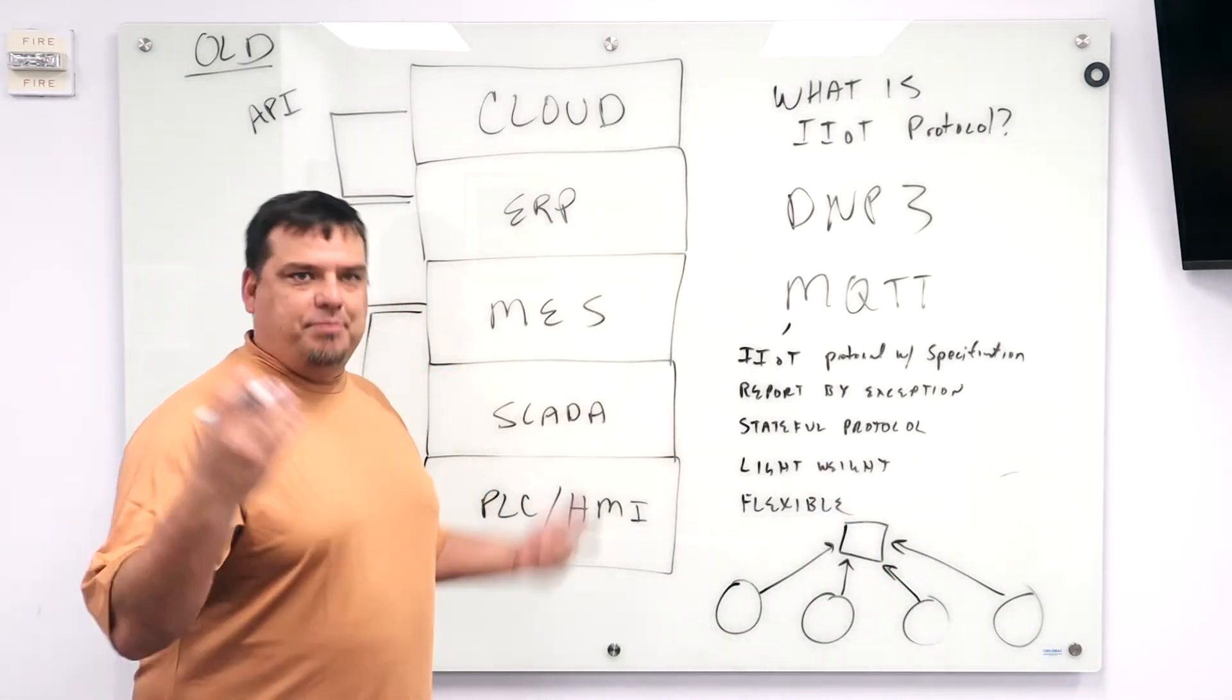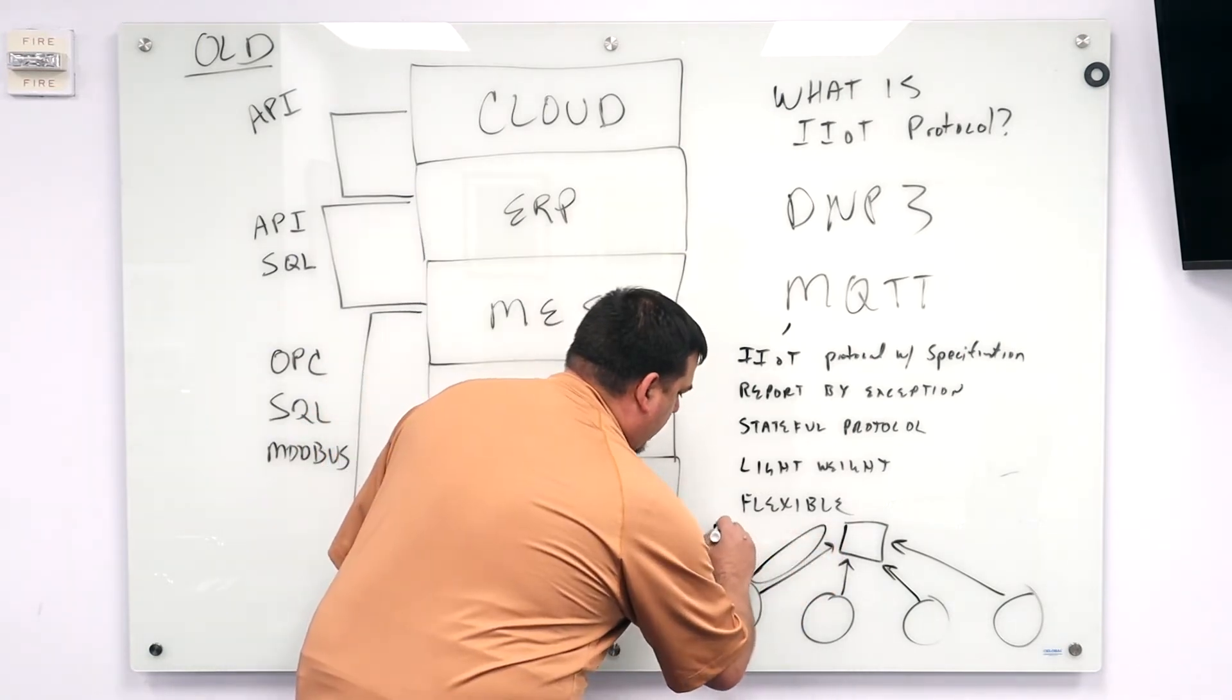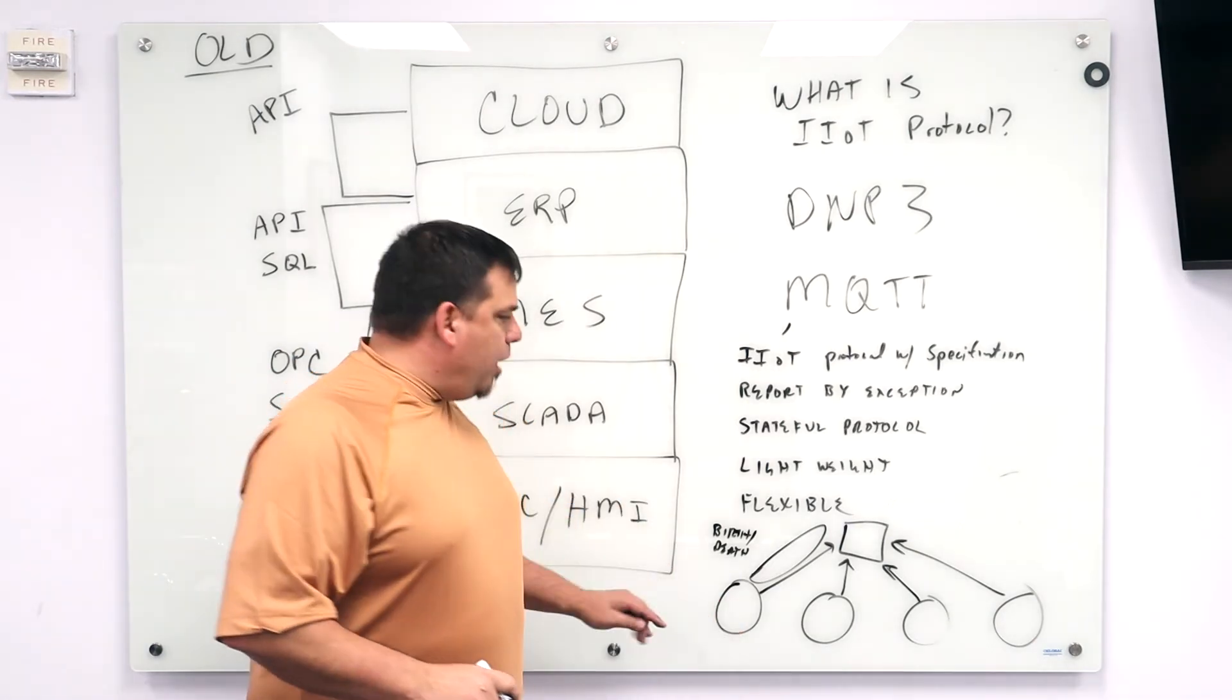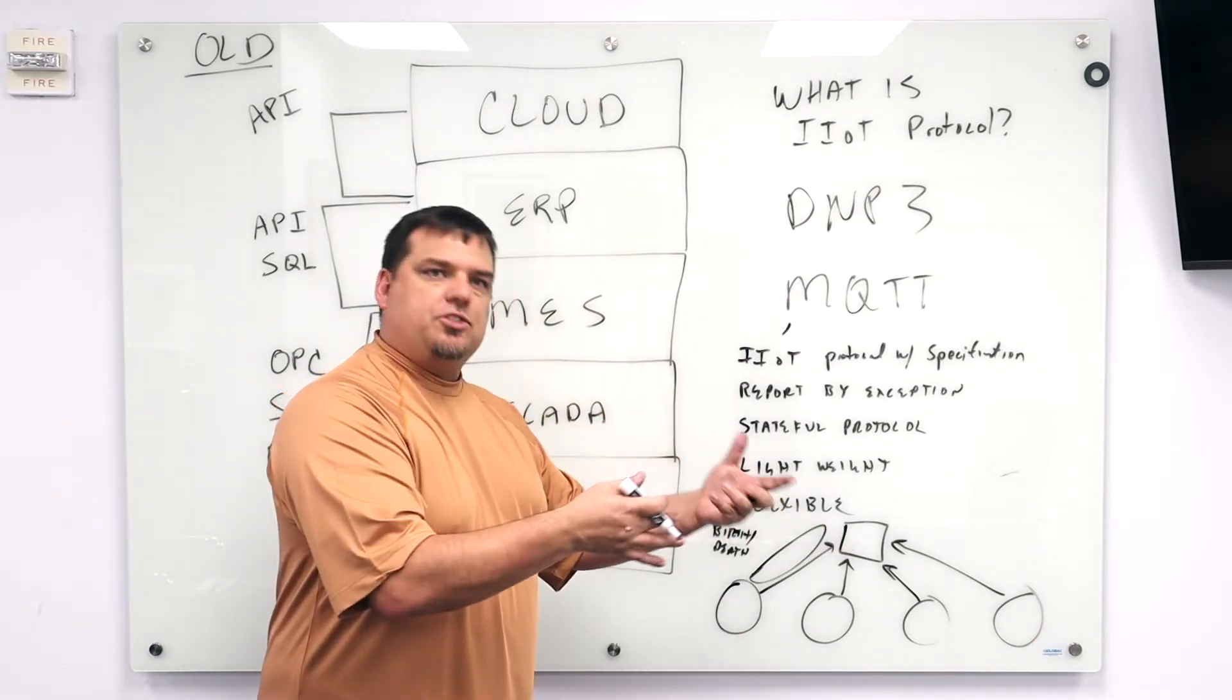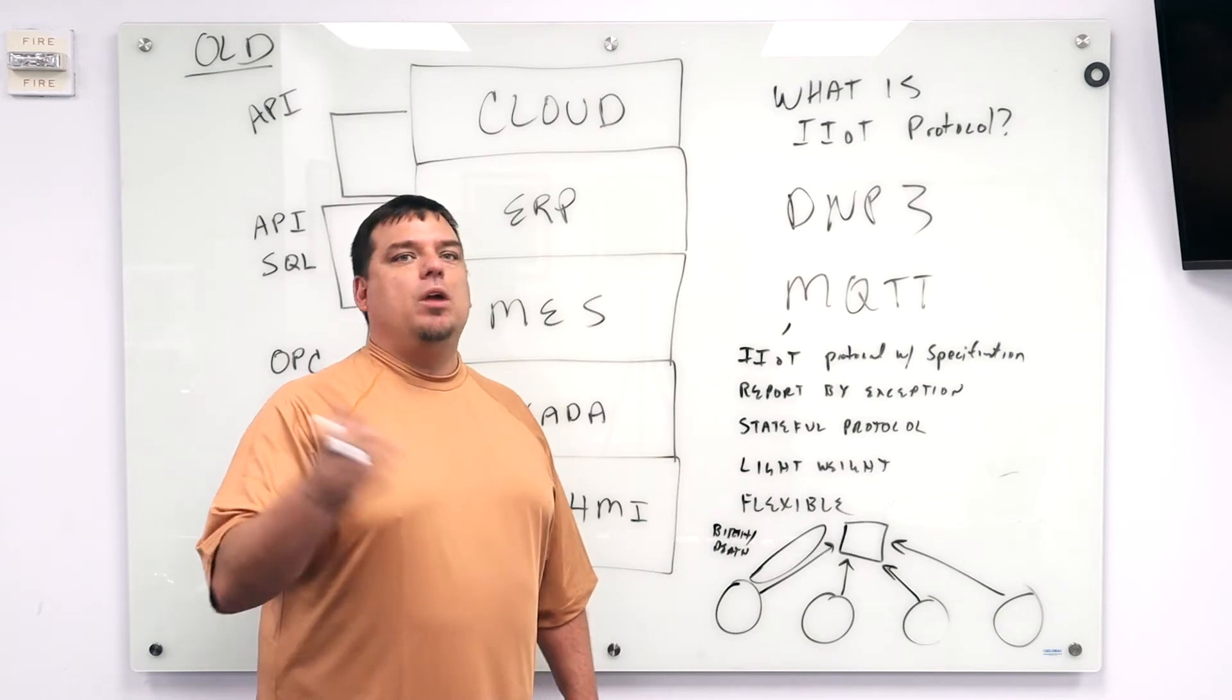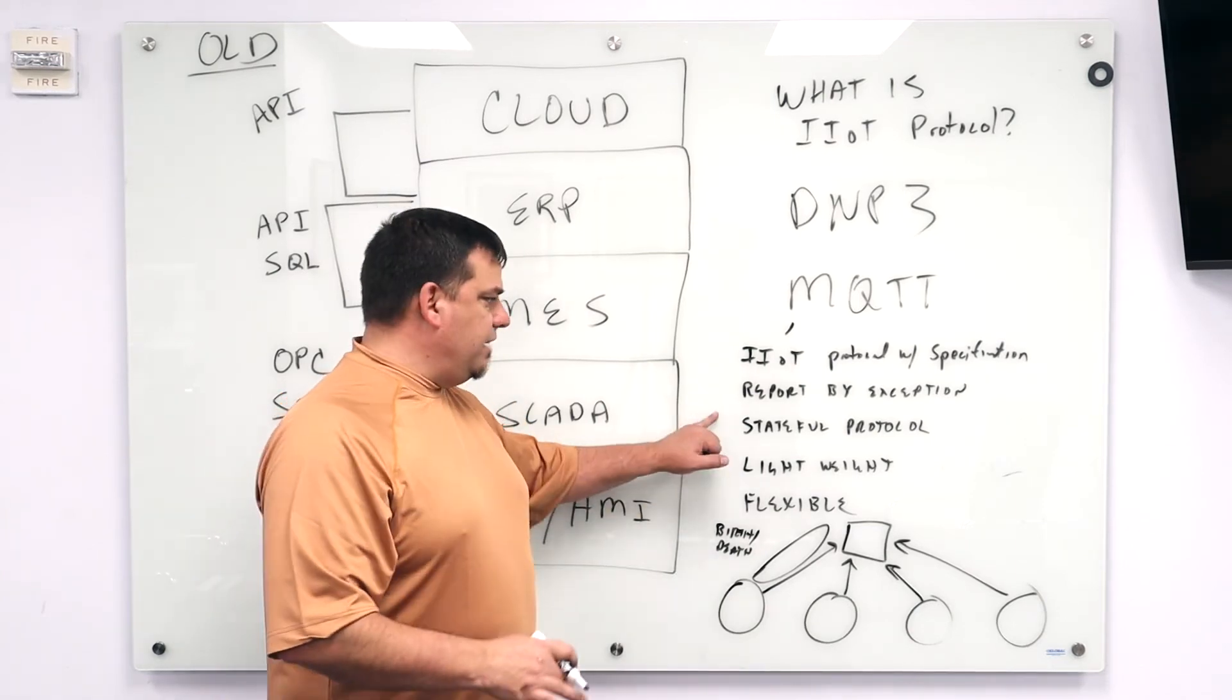The third part, stateful protocol. Basically what that means is there's always a connection here and we always know what that connection is. We do that through what's known as birth and death certificates. So part of the MQTT protocol is that the client will publish a birth certificate to the server. That means that any person who goes to the server and takes a look at the information for that node will know when that node came online, how many times it's disconnected, and when was the most recent death certificate published, and when was the most recent birth certificate published. Very important. That's the stateful piece.